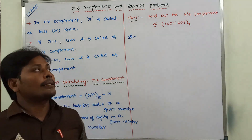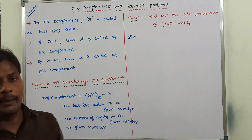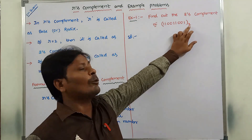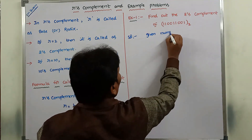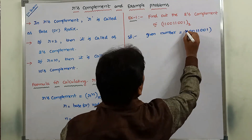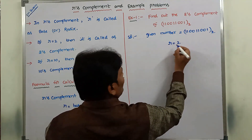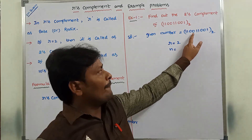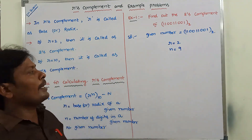Now, the first example: find out the 2's Complement of 110011001 in base 2. The given number contains base or radix equal to 2. The given number N is 110011001 base 2. Small n is the number of digits in the given binary number: counting 1, 2, 3, 4, 5, 6, 7, 8, 9 — so small n equals 9. Capital N is the given number 110011001.